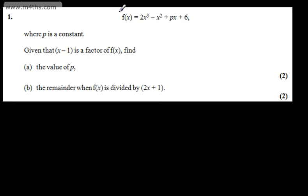This is question number one. It says f(x) = 2x³ - x² + px + 6, where p is a constant. Given that (x - 1) is a factor of f(x), find (a) the value of p, and (b) the remainder when f(x) is divided by (2x + 1).